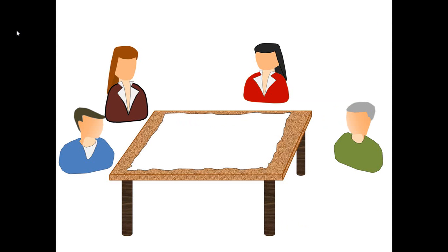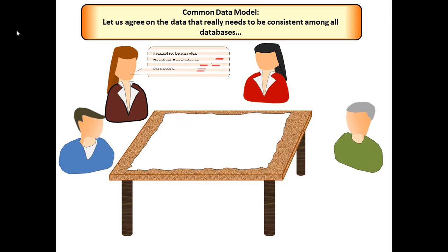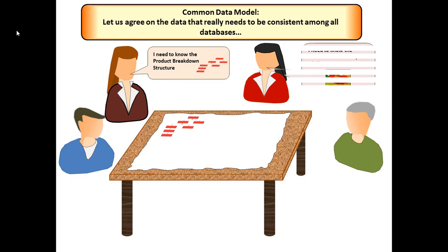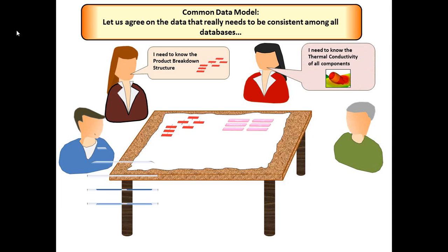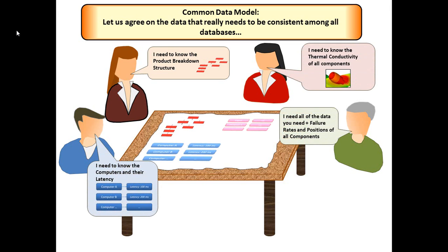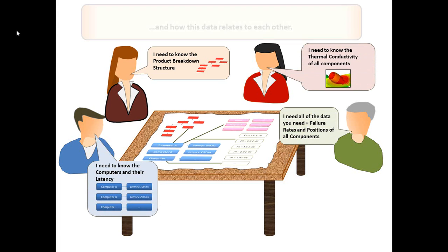First of all, the domain experts need to sit together and agree on a minimal set of data which is needed for a consistent baseline. For example, product breakdown structure, thermal conductivity, system latency, and failure rates for system analysis.